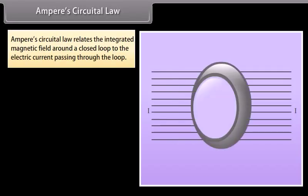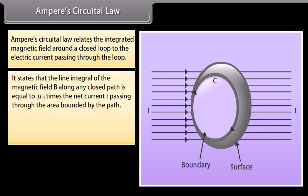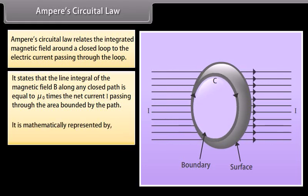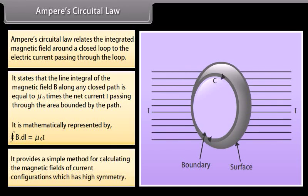Ampere's Circuital Law relates the integrated magnetic field around a closed loop to the electric current passing through the loop. It states that the line integral of the magnetic field B along any closed path is equal to mu-0 times the net current I passing through the area bounded by the path. Mathematically, the closed integral of B dot dL equals mu-0 I. It provides a simple method for calculating the magnetic fields of current configurations which have high symmetry.